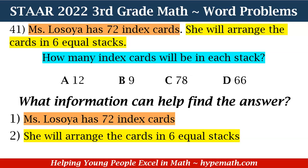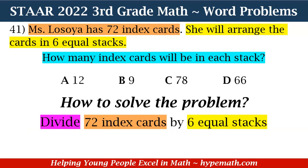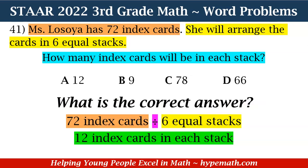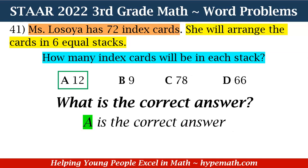Now that we have the information that will help us find the answer, our next question is how to solve the problem. Because we're trying to find out how many cards are in each stack, we need to divide 72 index cards by six equal stacks. When we divide 72 by six, our answer is 12 index cards in each stack. We need to look at all of our answer choices to see which one has 12 as the answer — and yes, A is the correct answer. Great job, third graders.